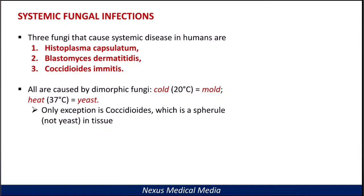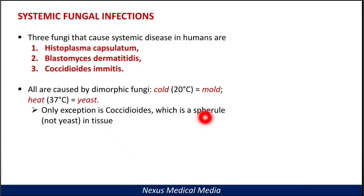There is only one exception: coccidioidomycosis. This one is actually a spherule, not a yeast. It's a spherule that is found in tissue — it doesn't form a yeast.